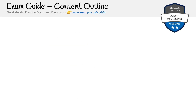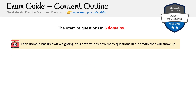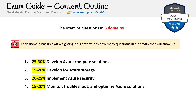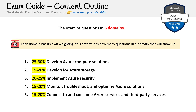For the content outline, there are five domains. Each domain has its own weighting that determines how many questions from that domain will appear. Azure uses a range of questions rather than a guaranteed fixed number. The five domains are: Develop Azure Compute Solutions, Develop Azure Storage, Implement Azure Security, Monitor/Troubleshoot and Optimize Azure Solutions, and Connect and Consume Azure Services and Third-Party Services.